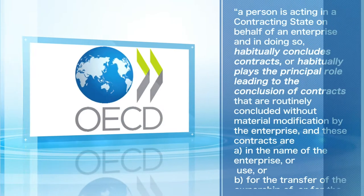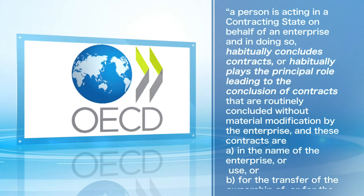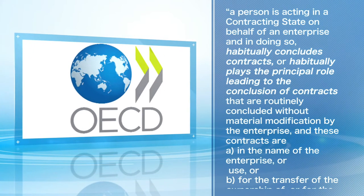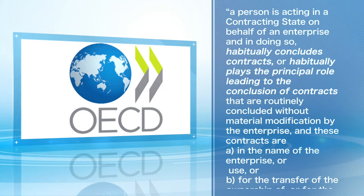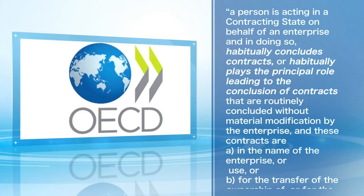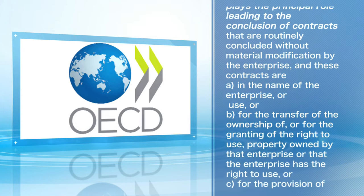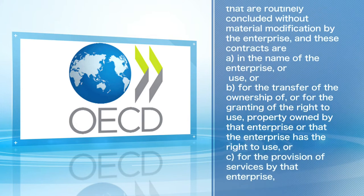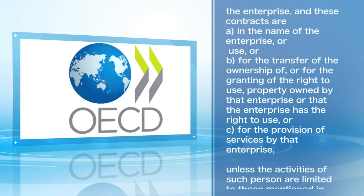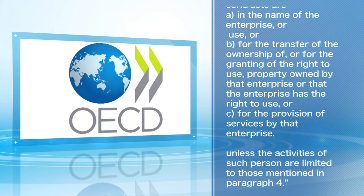According to the new OECD definition, which is quite complex, it is no longer possible for a company to avoid a PE in another country if a person is acting in a contracting state on behalf of an enterprise and in doing so habitually concludes contracts or habitually plays the principal role leading to the conclusion of contracts. This new definition is therefore much wider than the old one, and many representation offices would therefore be qualified as permanent establishments.